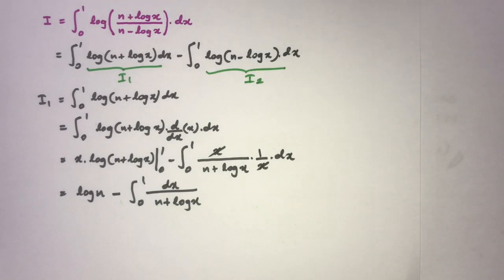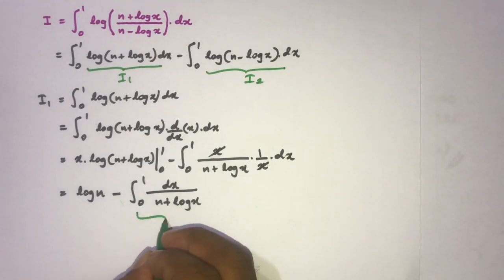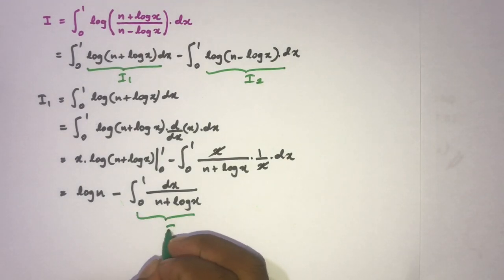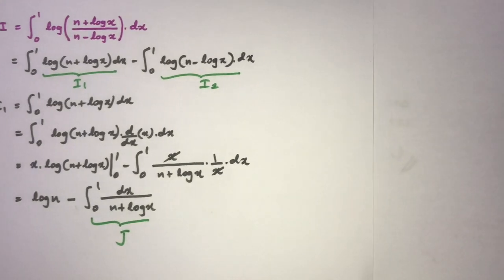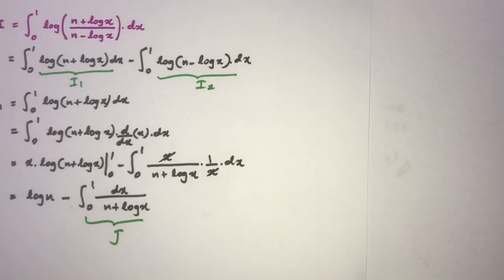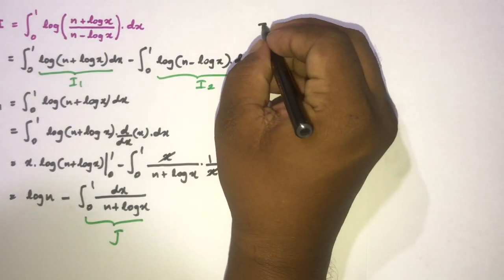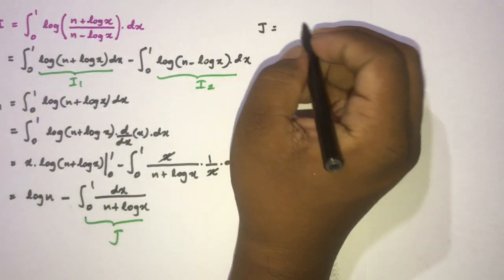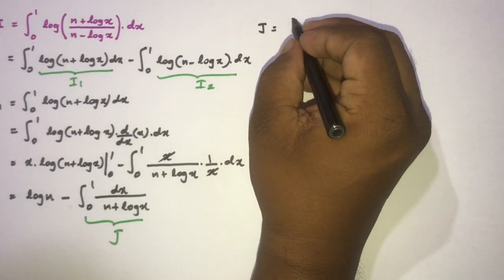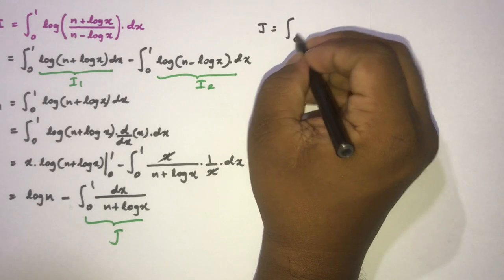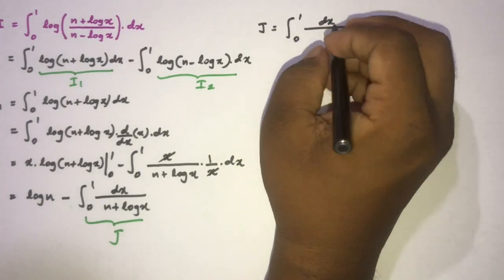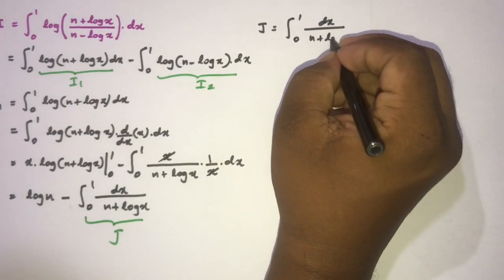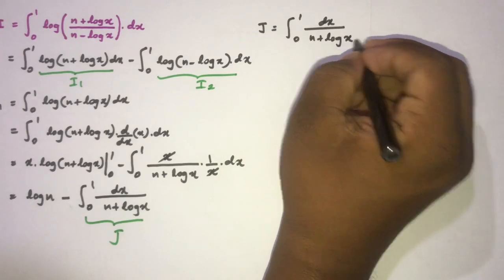I am going to call this sub-integral J. So J equals the integral from 0 to 1 of dx over (n plus natural log of x).